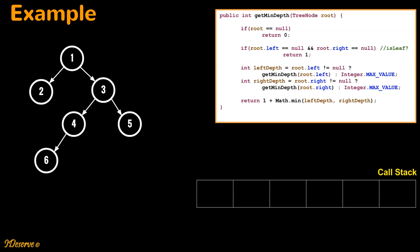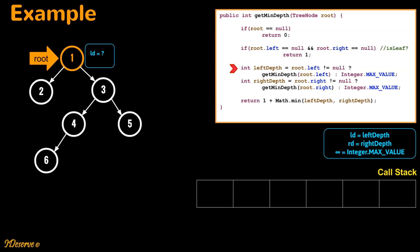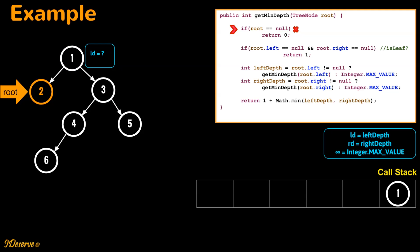Let us understand and visualize the algorithm through an example. Consider the following binary tree and start with the code visualization. First we check if root is null — it is not, so we move on. We check if root is a leaf — it is not, so we move on. Next we check if the left subtree of the root is null — it is not, so we recursively call get min depth for the left child. Since we are calling recursively, we store the function state in a call stack so that when execution of the left subtree call returns, we can resume the current function.